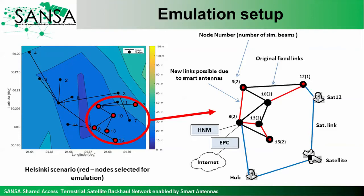Performance of these two components is demonstrated by an emulation setup inspired by a backhaul network topology realized in Helsinki using highly directional antennas. In our emulation setup we selected six base stations from the Helsinki database. The black lines in the right figure represent the existing backhaul links, and the topology of this original backhaul network is not flexible, as the backhaul links are established by means of highly directional fixed antennas.